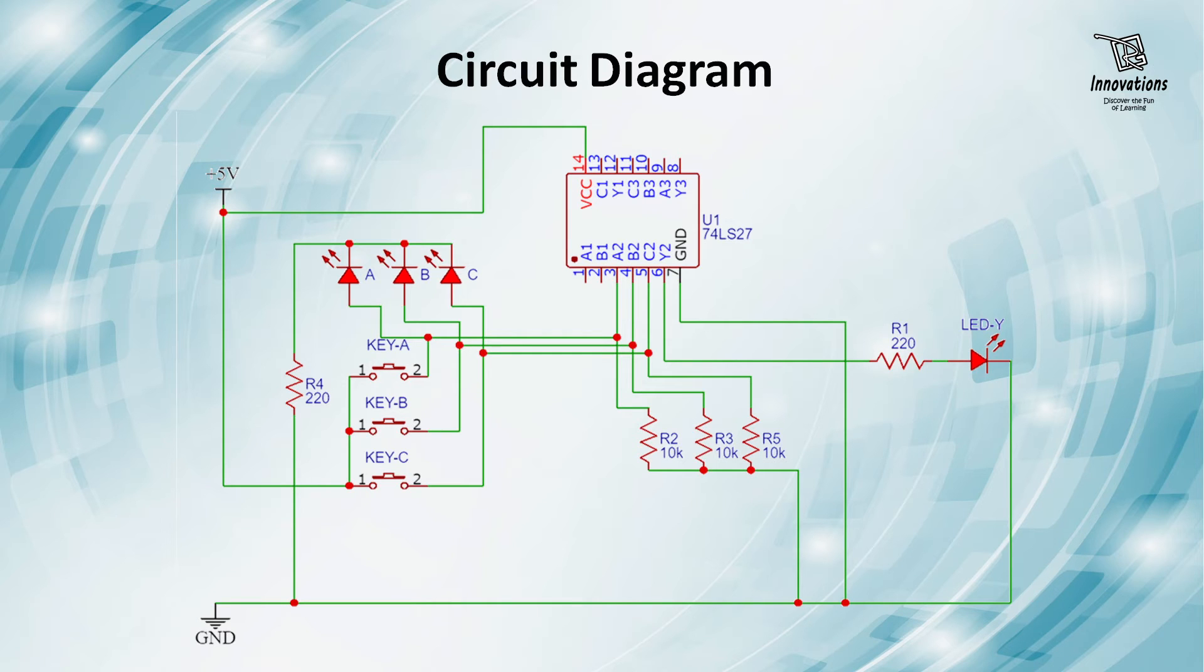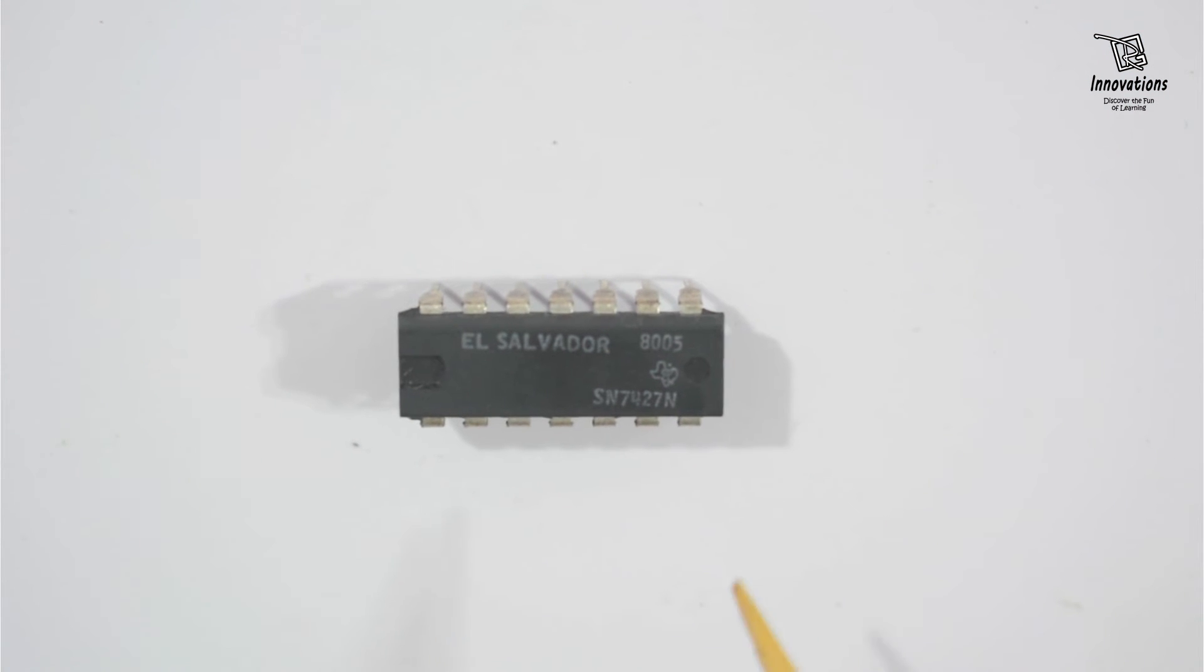Now let us move on to the practical demo of the three-input NOR gate. Here we can see the IC which is 7427 or 74HC27 or 74LS27. This IC is a three-input NOR gate. It has three NOR gates inside it. It is a 14-pin IC.